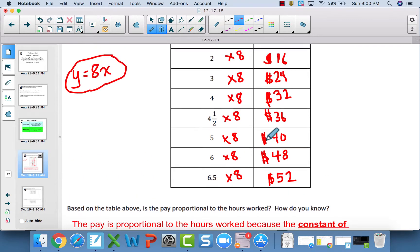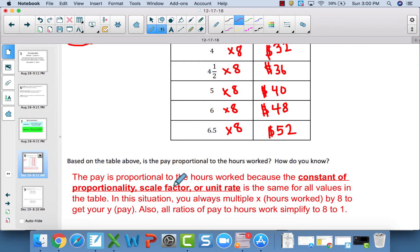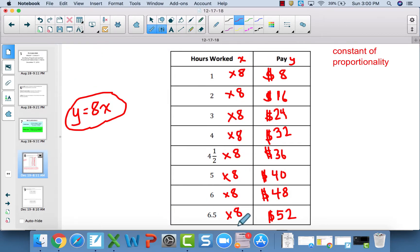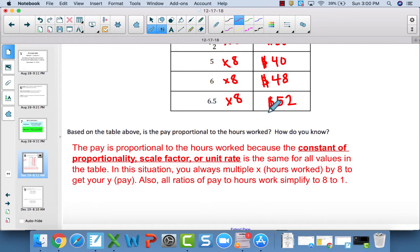You can use either of those strategies: looking at making sure that multiplicative number, that constant of proportionality, scale factor, unit rate, is the same, which in this case it is - it's always 8. Or you can simplify down the ratios and make sure they simplify down to the same ratio.